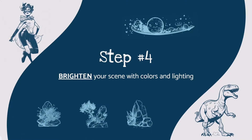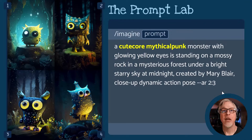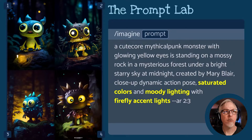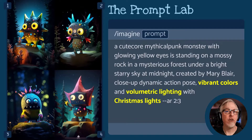Let's expand upon our core prompt by adding an additional phrase that will really energize our results. Up to now, we've been working with Midjourney's default house color palette and lighting, modified by Mary Blair's style. But we can take things a step further. There are many lights, colors, and accents you can apply to any scene in Midjourney — I provided a short list of my favorites at the end of this video. Back to our core prompt: a cute core mythical punk monster. Watch what happens when I add lighting, colors, and accent lights. Saturated colors, moody lighting, and firefly accent lights — all three are optional, but the results show a great deal more texture, etching, bounce lighting, and realism. We can also enhance this by changing to vibrant colors, volumetric light, or Christmas lights. Experimentation is the key.